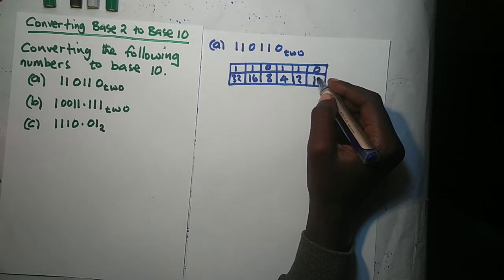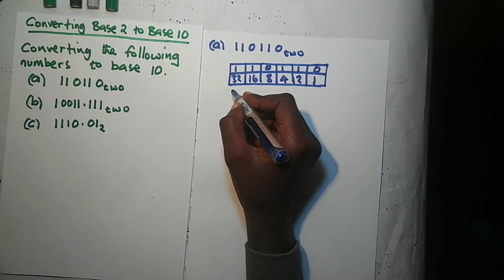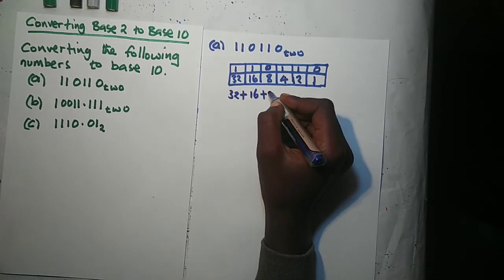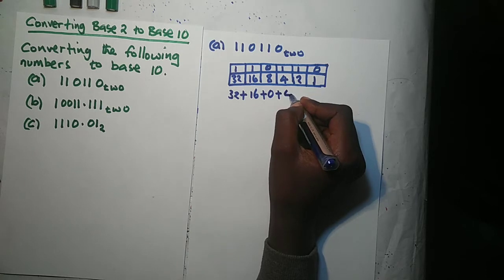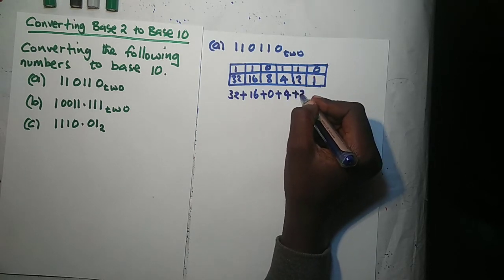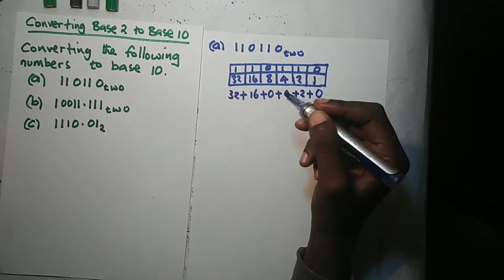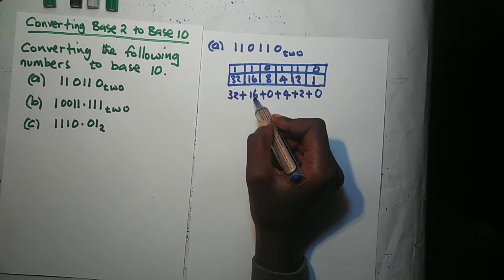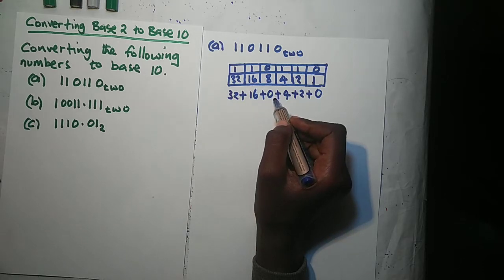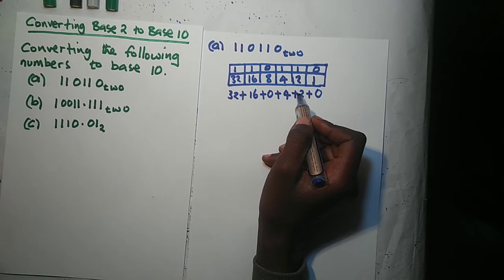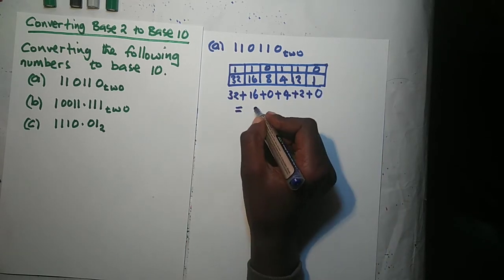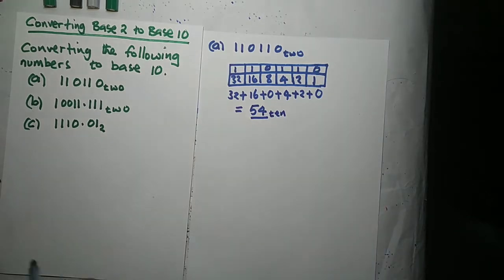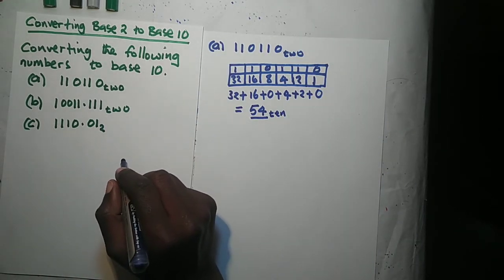Now we multiply the bottom number by the top number: 32×1 = 32, plus 16×1 = 16, plus 8×0 = 0, plus 4×1 = 4, plus 2×1 = 2, plus 1×0 = 0. Adding these: 32 + 16 = 48, plus 4 = 52, plus 2 = 54. So our answer is 54 in base 10.